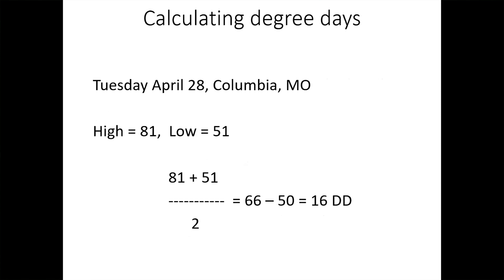Another example: Tuesday it was a bit warmer — we had a high of 81 and a low above threshold completely, so the simple calculation gives us 16 degree days. Adding the two days together gives 21. We do this from January 1st, adding the degree days that accumulate every single day through the calendar.